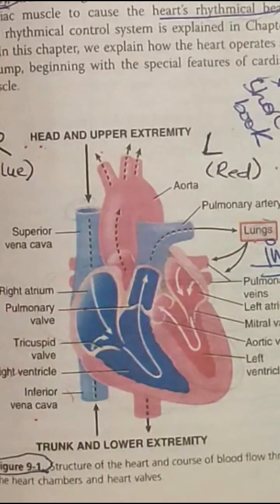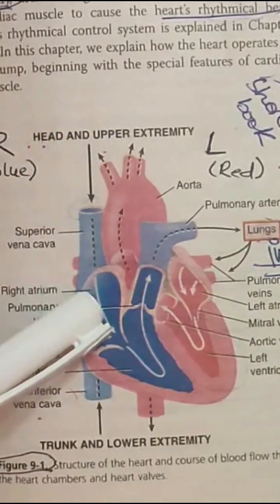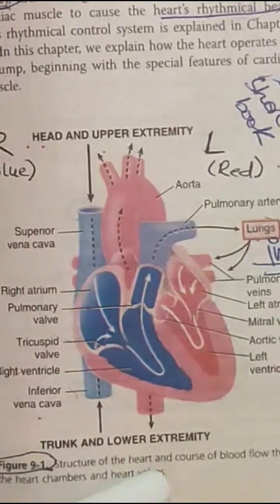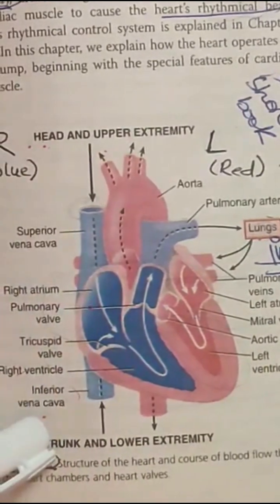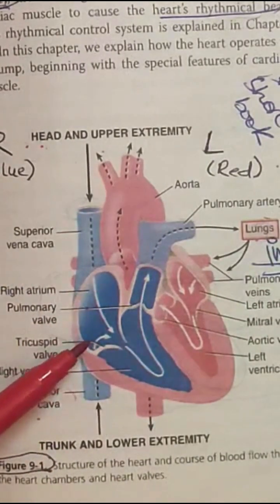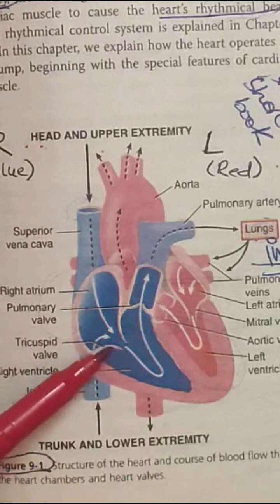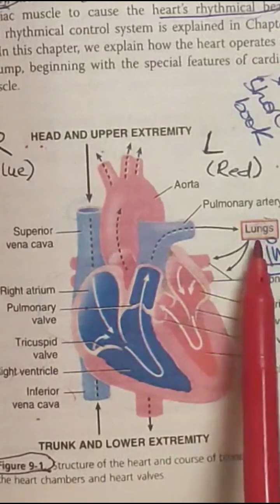During blood flow through the heart in each heartbeat, deoxygenated blood from the head and upper extremities enters the right atrium through the superior vena cava, and deoxygenated blood from the trunk and lower extremities enters the right atrium through the inferior vena cava. This deoxygenated blood is then pumped by contraction of the right atrium into the right ventricle by opening of the tricuspid valve, and blood travels to the lungs through the pulmonary artery.